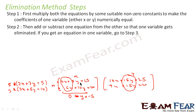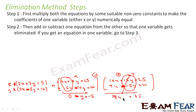If one equation had minus 5y, then adding would make it 0 instead of subtracting. The goal is to eliminate one variable. Here we subtracted and in another case we would add. The result is one equation totally in terms of y, and in the other case one equation totally in terms of x. The target is to eliminate one variable.